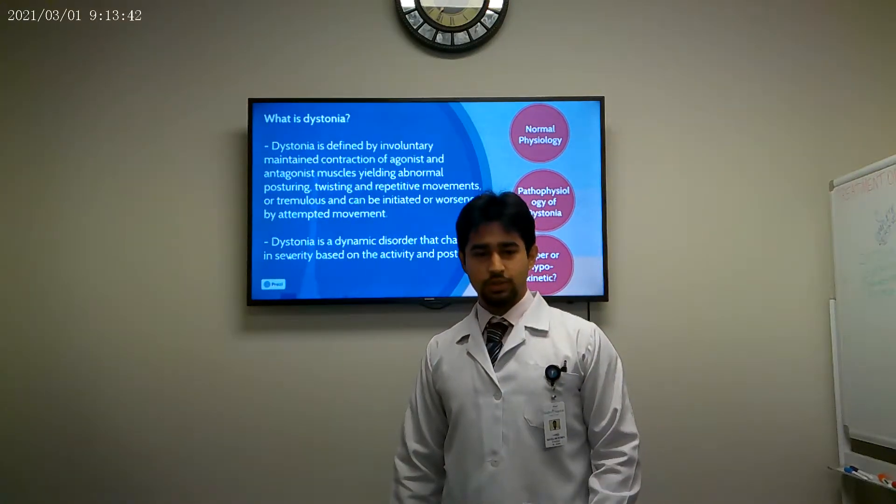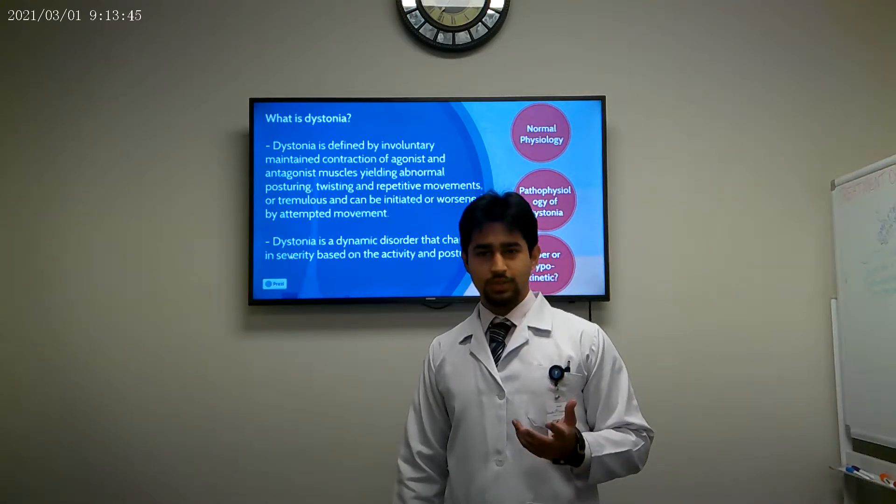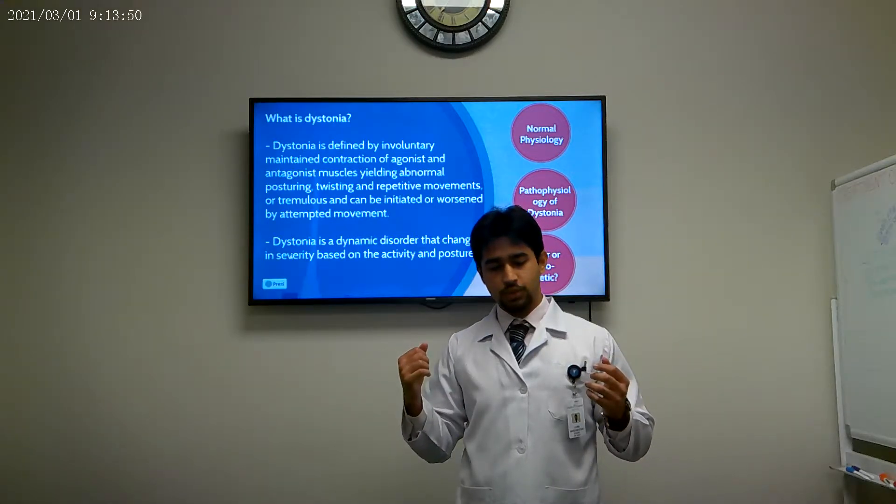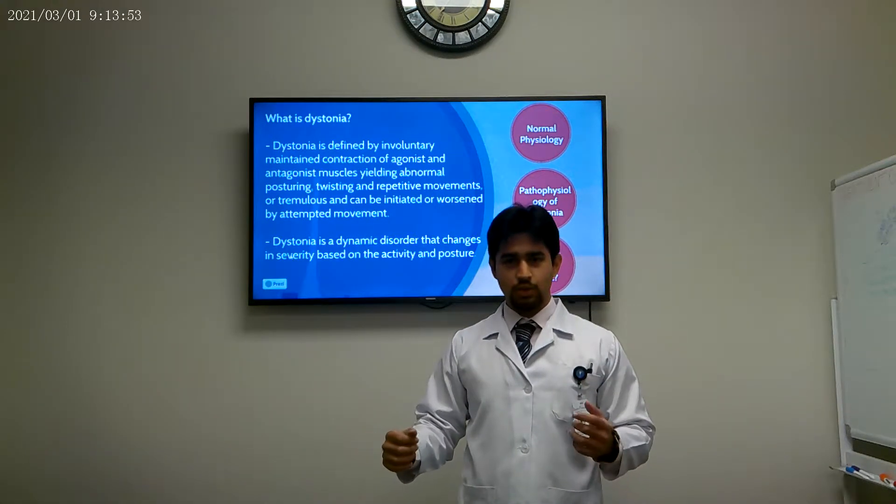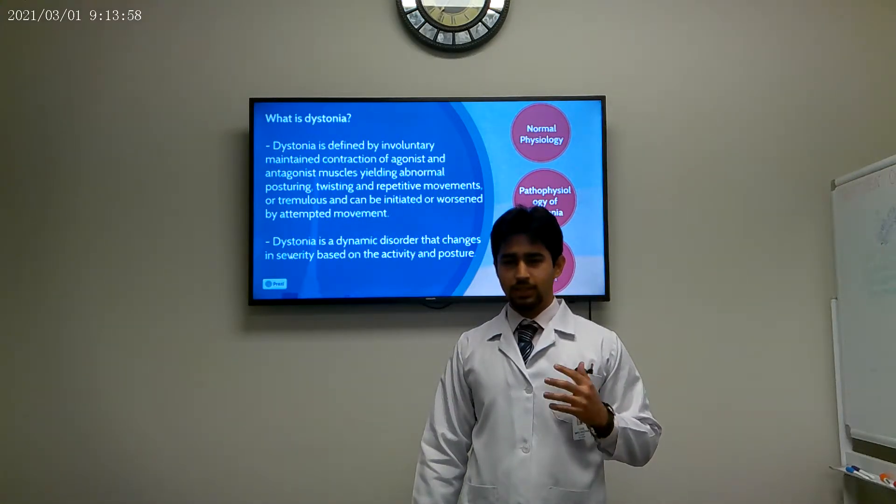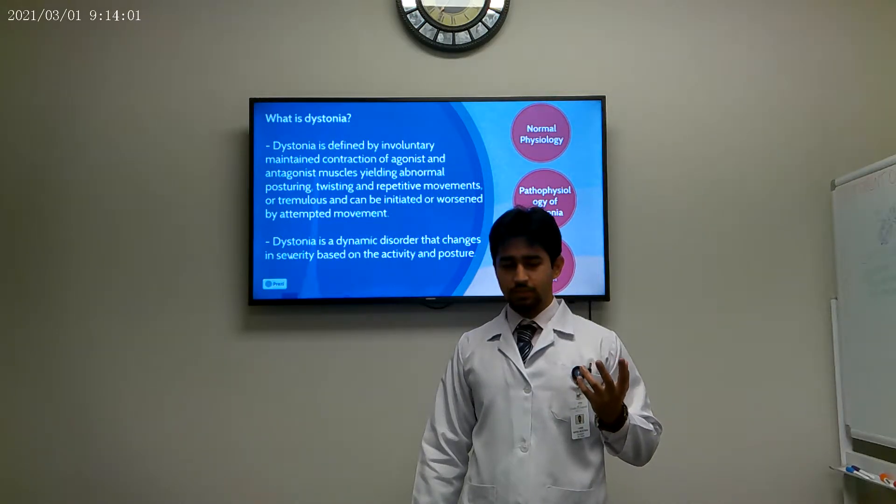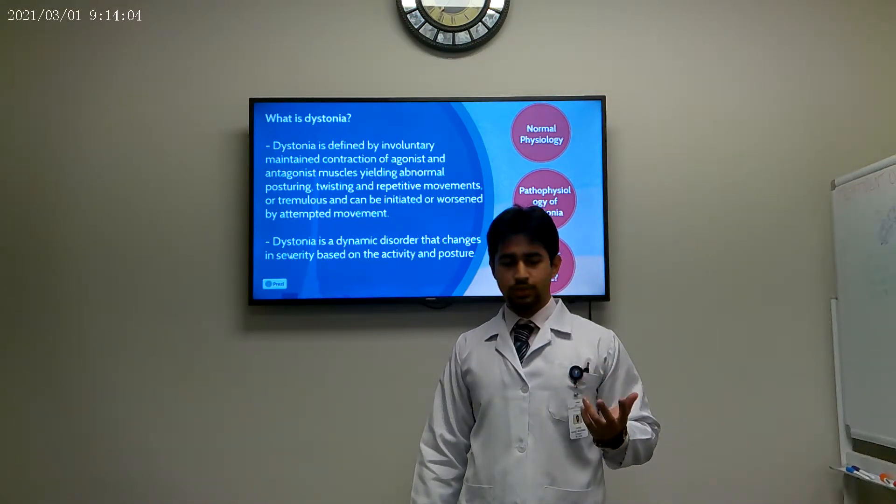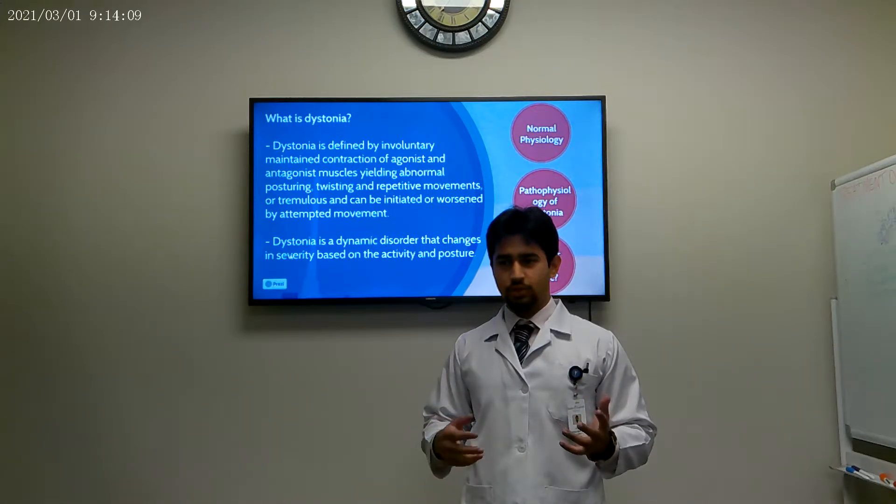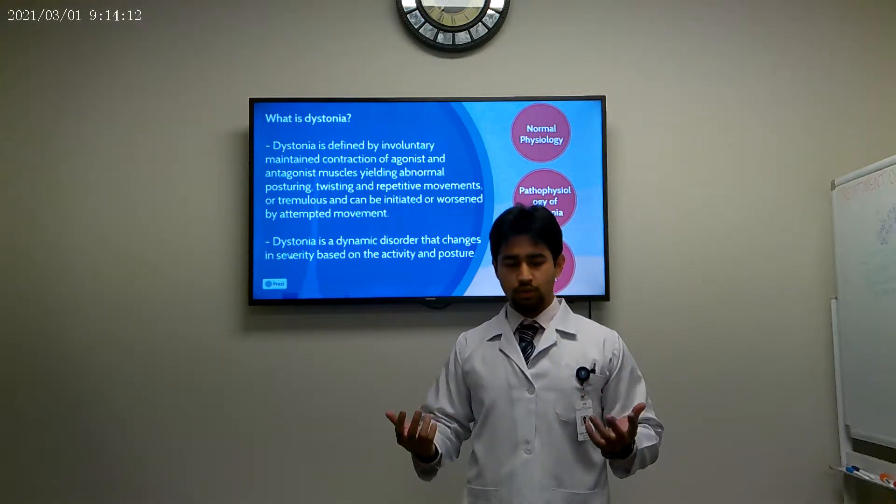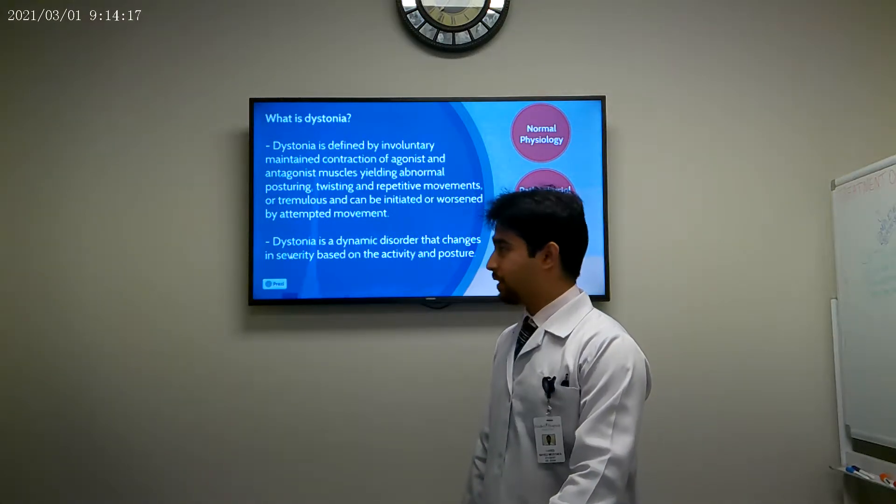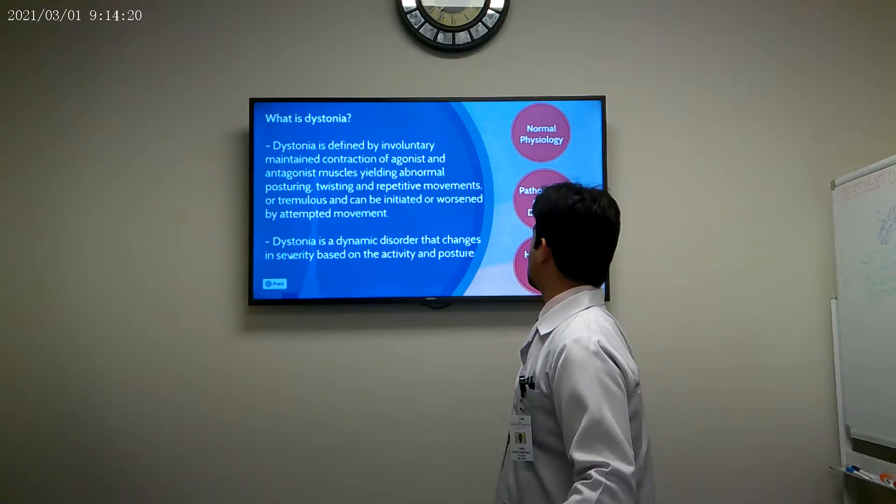So we are going to start with the definition. Dystonia is defined as involuntary sustained muscle contraction. And these muscle contractions can manifest as either sustained postures, they can be twisting or repetitive movements, or we can even get tremors. And the interesting thing about dystonia is that these movements or these abnormal contractions can often be initiated or worsened by voluntary movements. In this way, dystonia is considered a dynamic disorder because the severity changes as we initiate or attempt movements.